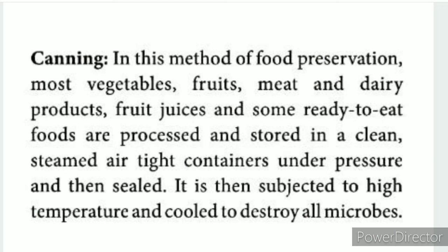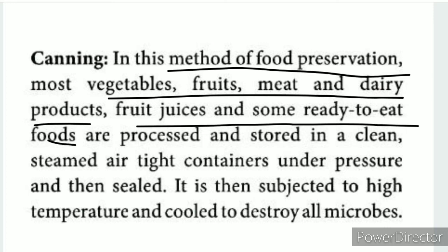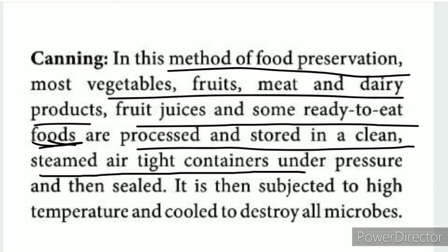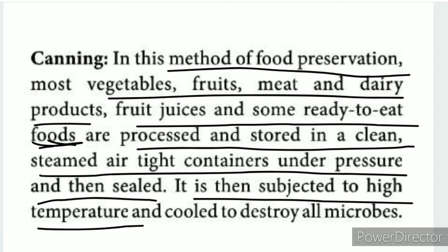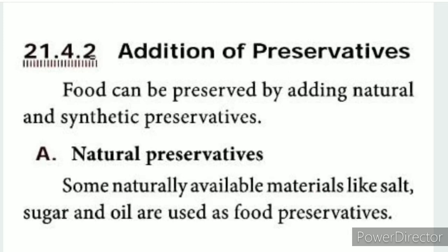Canning is a method of food preservation. Vegetables, fruits, meat, dairy products, fruit juices, and some ready-to-eat foods are preserved using this method. The food is cleaned, steamed in an airtight container under pressure, then sealed and subjected to high temperatures to destroy all microbes. This is how food like potato chips in packages is preserved under pressure.